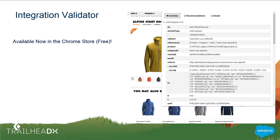They used the integration validator — a Chrome plugin our Einstein team developed to help developers validate their implementation. If there's any error, it shows red and tells you what's wrong. You can go on any Commerce Cloud site, use it to see what activities are being tracked on a given page, what information is being tracked, and which cookies that information is logged to. The Recommendations tab shows what logic is being displayed on the page.